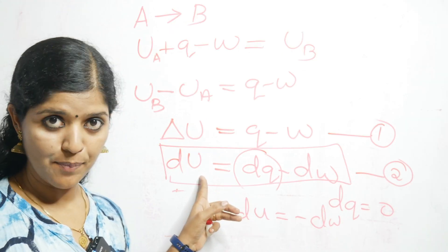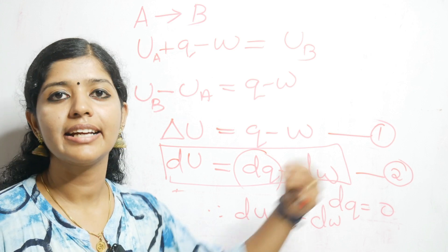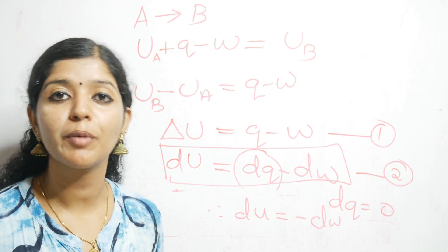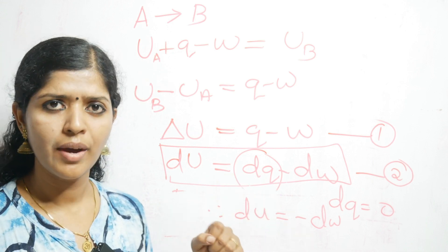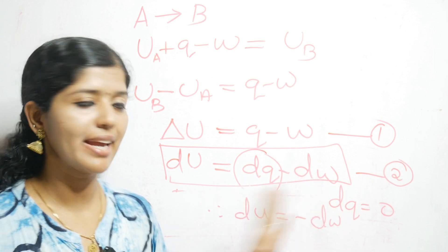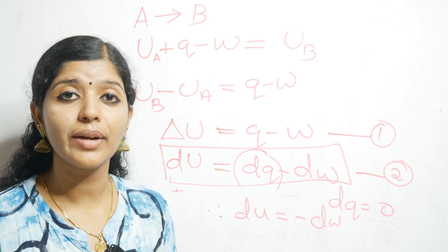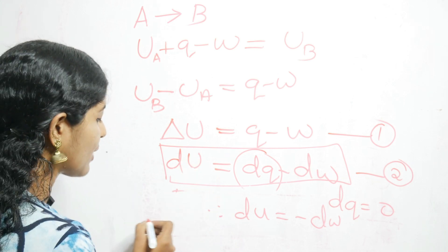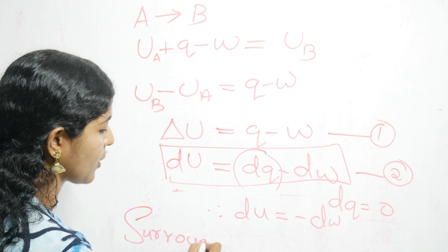The system has absorbed Q amount of heat energy and done W amount of work. So Q is positive — the system absorbed Q amount of heat — and it released W amount of work, so it is minus dW. Now for the surroundings, this will be just the reverse.